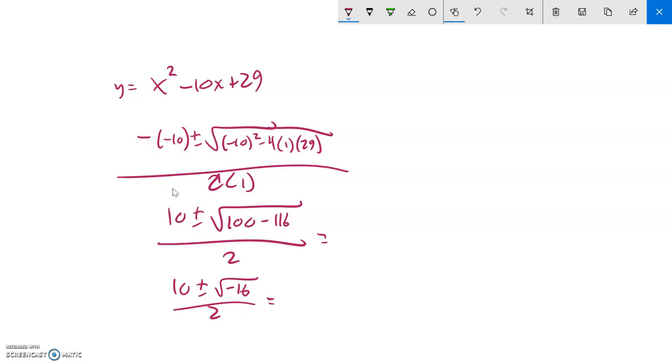So I have 10 plus or minus the square root of negative 16 over 2. Oh, looky there. 10 plus or minus. The square root of 16 is 4. The square root of negative 1 is i. That's divided by 2. So I divide those both by 2, and I get 5 plus or minus 2i. So notice I have two zeros here, one of them being 5 plus 2i, 5 minus 2i.